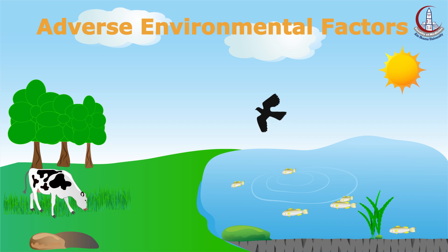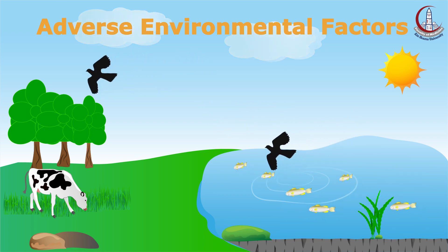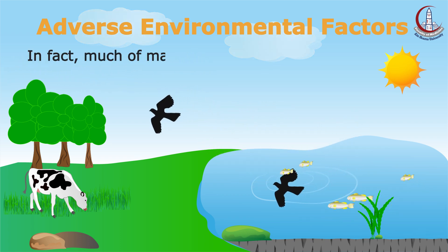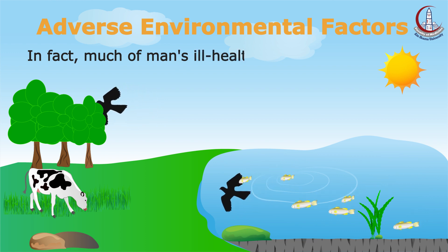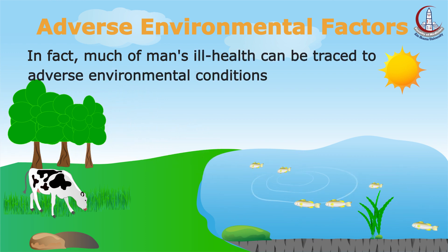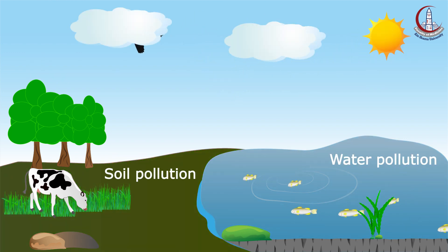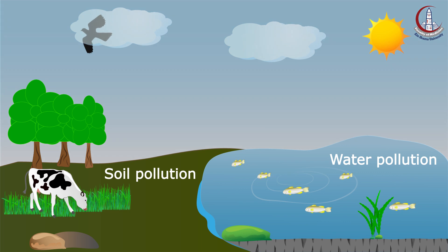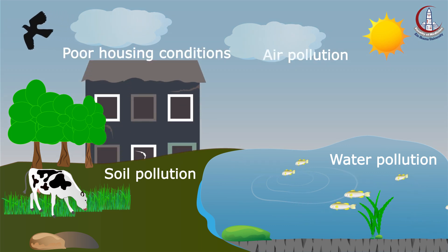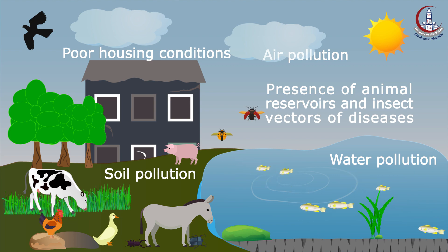The key to man's health lies largely in his environment. Much of man's ill health can be traced to adverse environmental conditions such as water pollution, soil pollution, air pollution, poor housing conditions, and the presence of animal reservoirs and insect vectors of diseases.